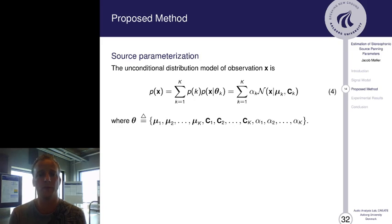Theta is the parameter vector, where we have the parameters alpha, which is the mixing probability, which means it's the probability of having the class K. Mu is the mean, which is directly related to the panning parameters that we want to estimate here. And C is the covariance matrix estimate.